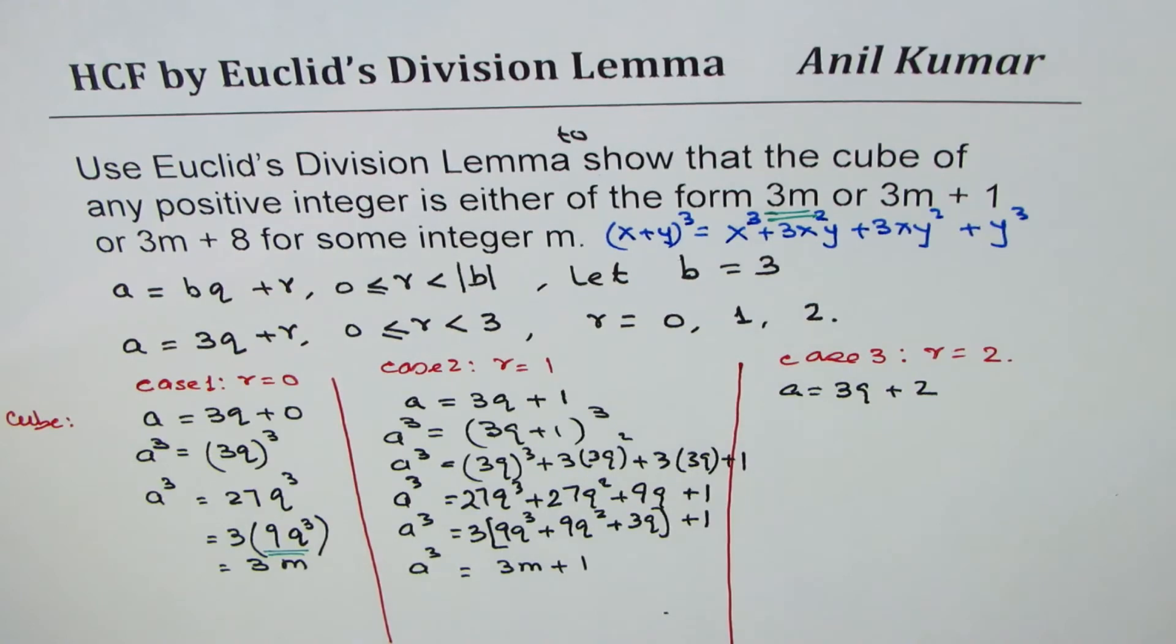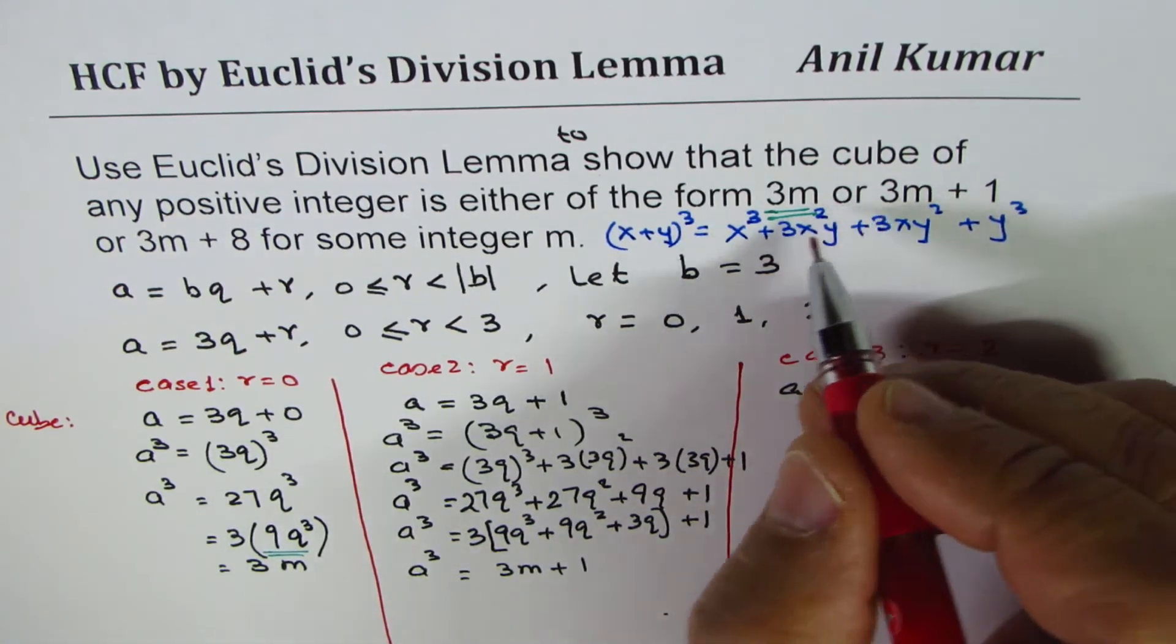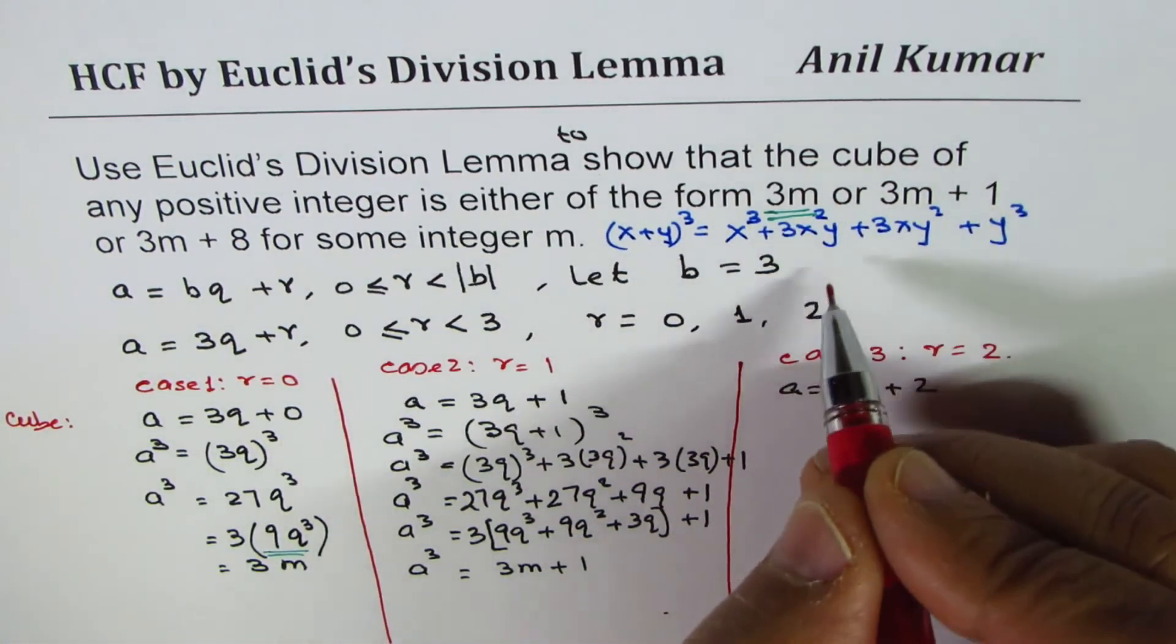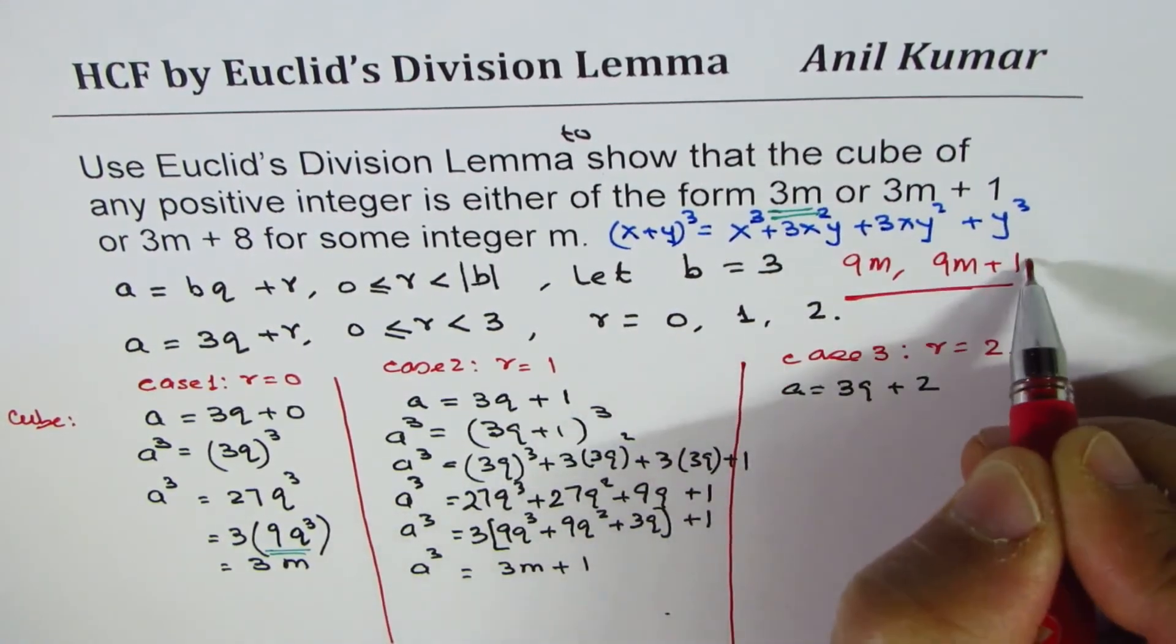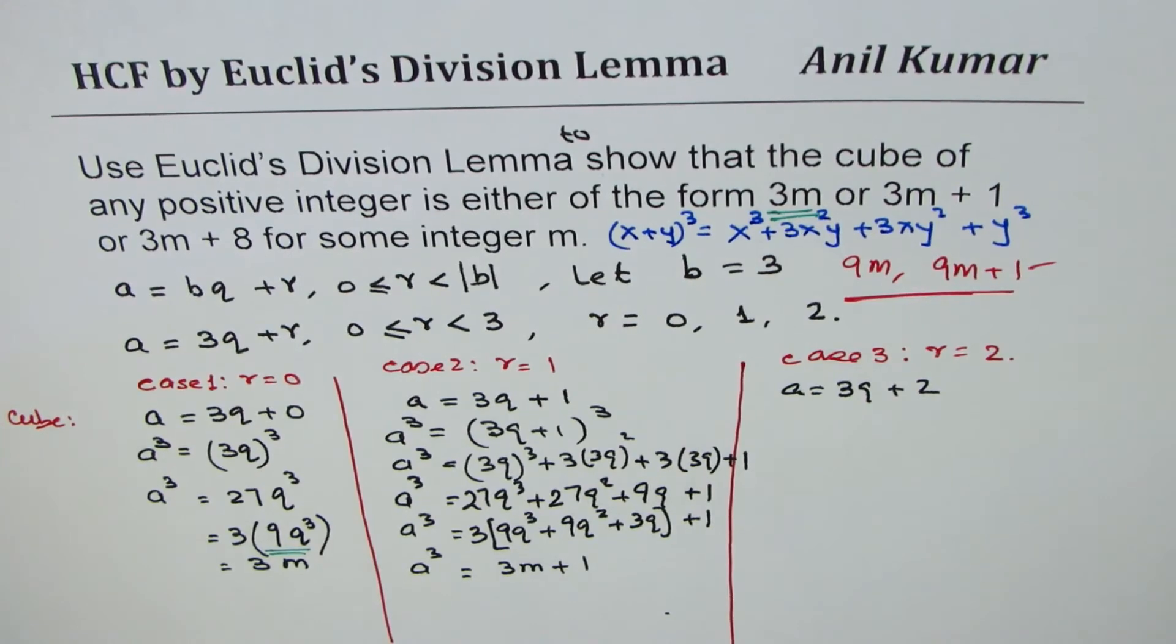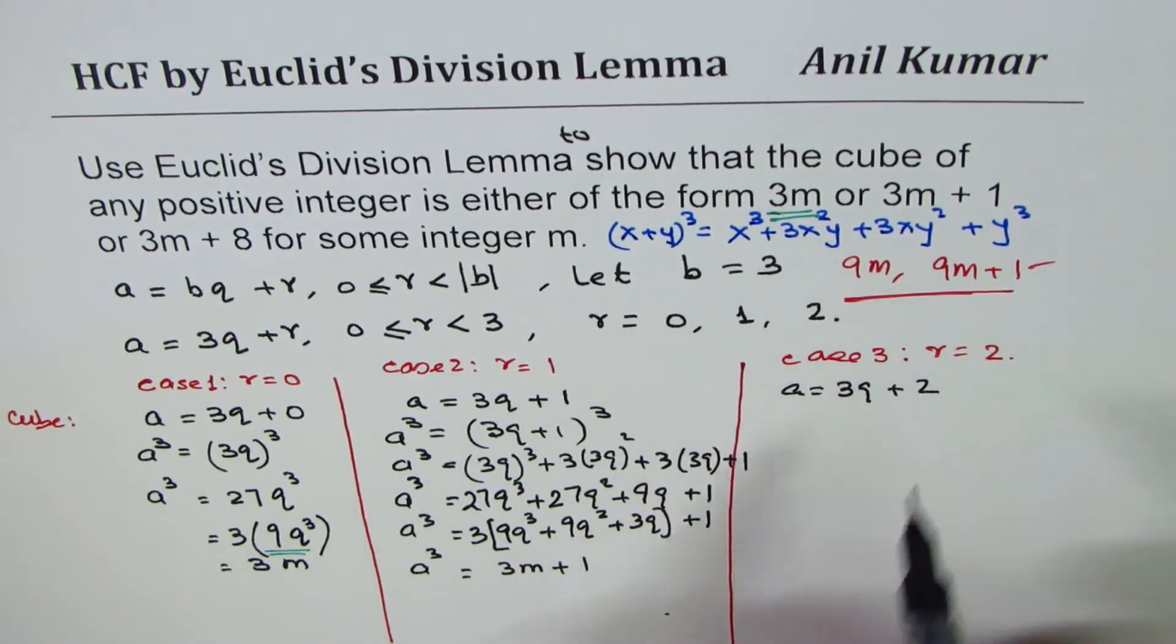You could have done 9M. I could change this question to 9M and 9M plus 1. So you could try with that question. You could rephrase the question. So we are done that part.